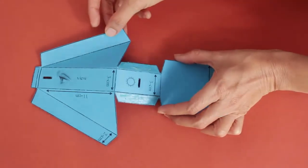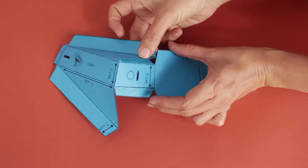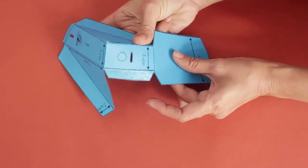Apply glue on the flaps and stick them to make a triangular box.